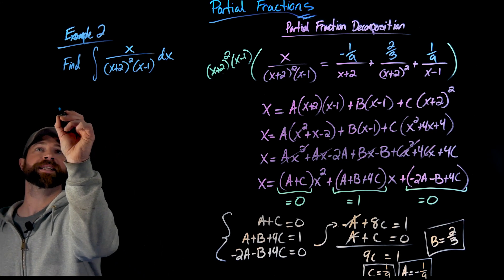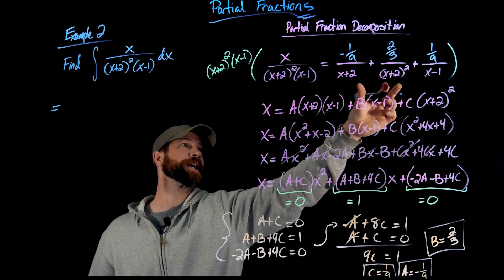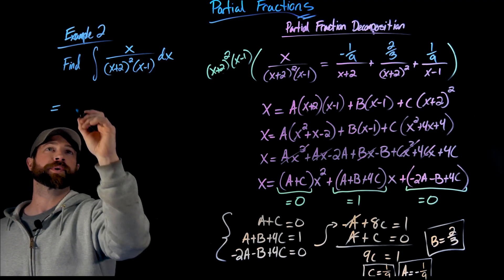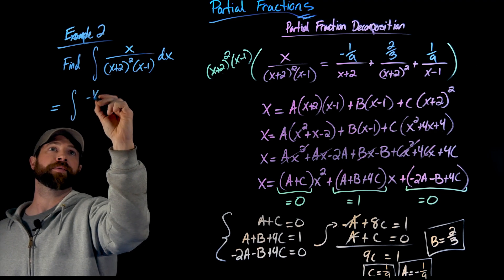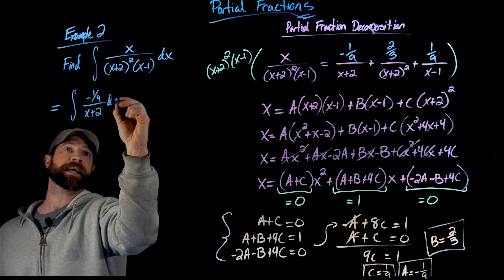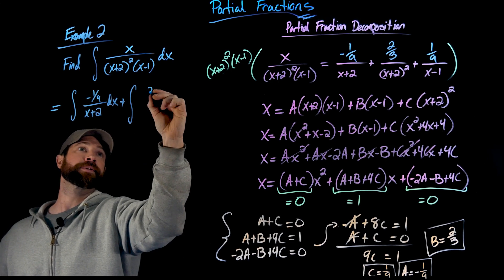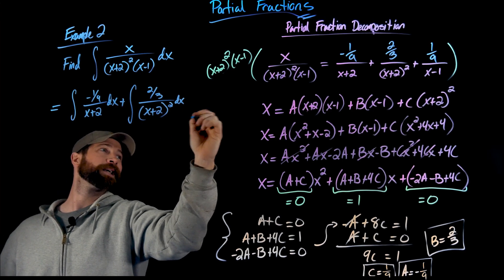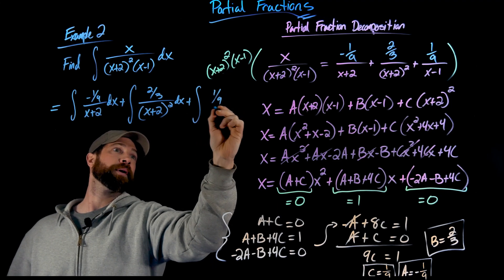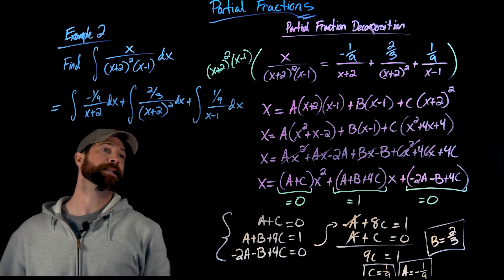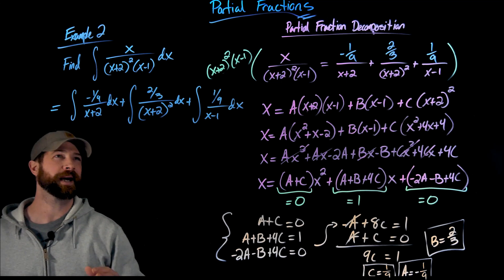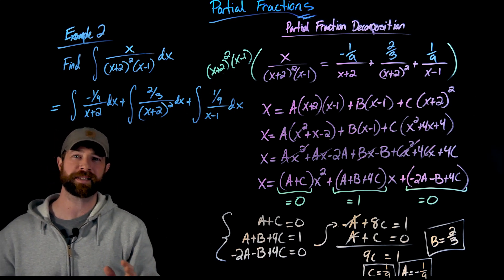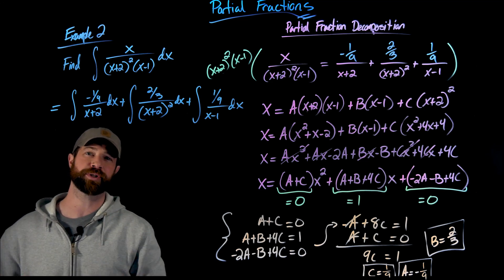So all that algebraic work has now told us that this equals this. What I'm going to do is instead of just replace this statement with that, I'm going to replace it and break it up in one move. So what I'll get is the integral of negative 1 ninth over x plus 2 dx plus the integral of 2 thirds over x plus 2 squared dx and plus the integral of 1 ninth over x minus 1 dx. Then as stated a second ago, I don't need to think deeply about these fractional pieces right here. What I'm going to do is just pull those out in the front of each of those. They're simply constants. And I'll leave them out to be multiplied by when I actually do the actual integration.